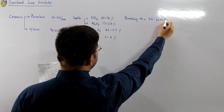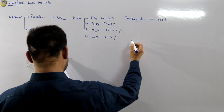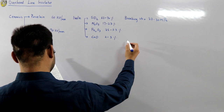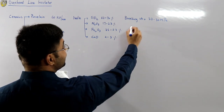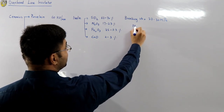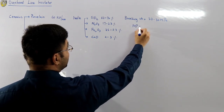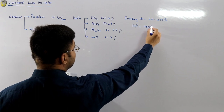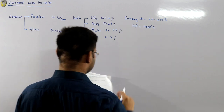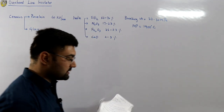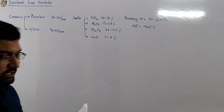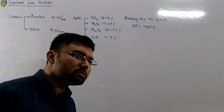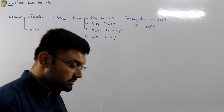Its melting point is 1900°C. So this is mechanically very strong — and we need two important things: mechanical strength and electrical strength.